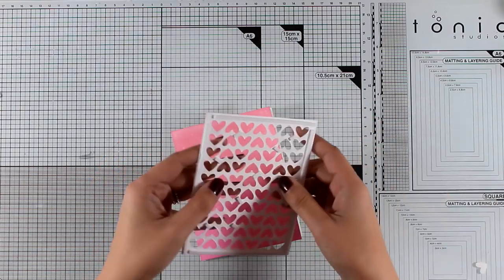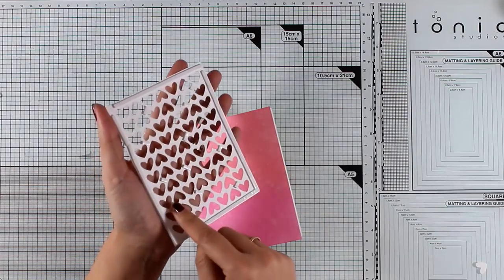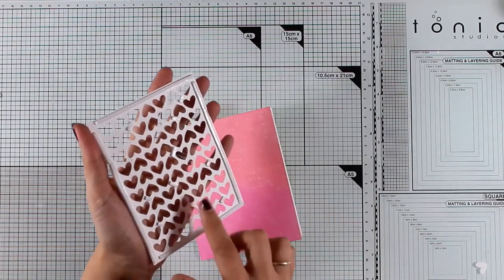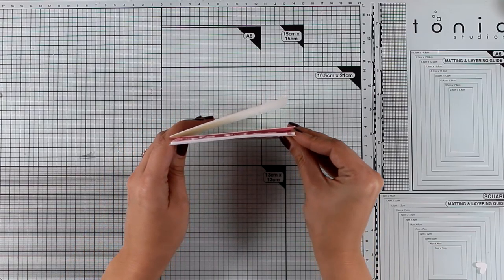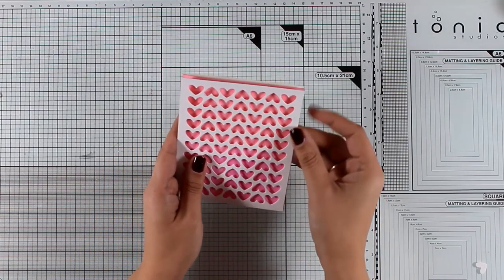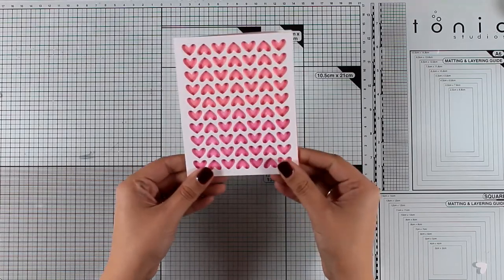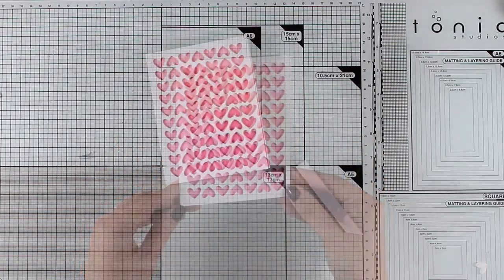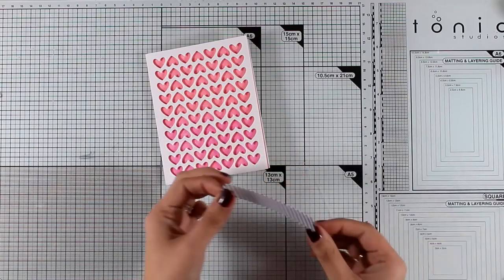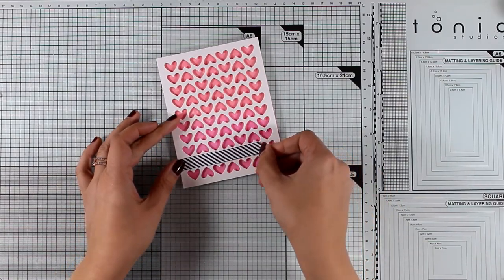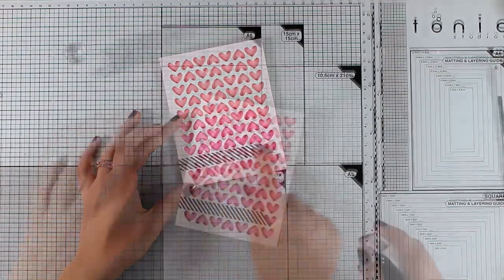Now I have added some foam tape at the back of my panel and I do have bits and pieces of that foam tape at the center of my panel so that everything is nice and leveled. I'm going to stick this on top of my card base and you see I have a beautiful background. You can stick any focal point on top of it. I decided to not steal the thunder of this background so I'm not going to stick anything as a focal point.